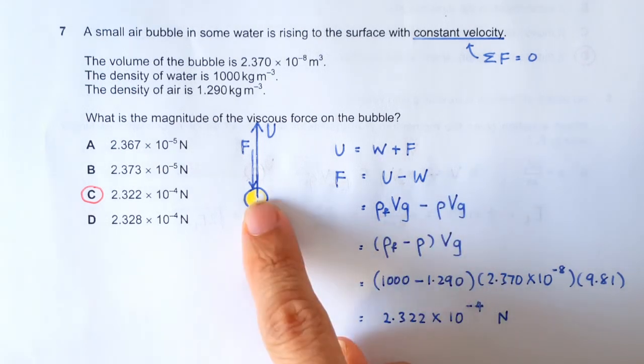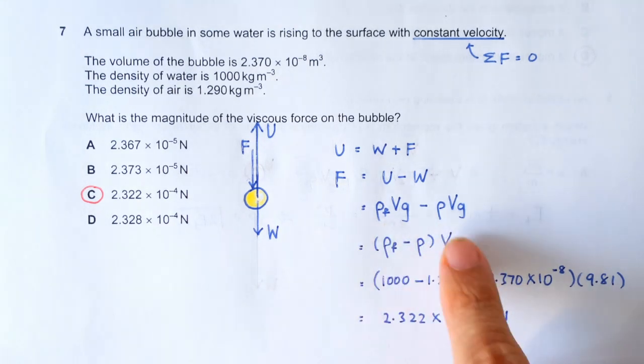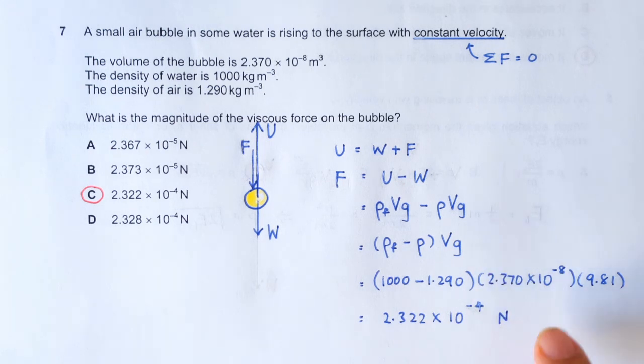Alright, the weight will just be the mass of the bubble times G. So, substituting all the numbers, you'll get the answer. Easy. Ta-ta!